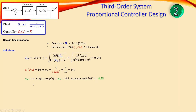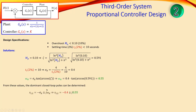The imaginary part omega_d is geometrically calculated as sigma_d times the tangent of arccos(zeta). Substituting sigma_d and zeta gives omega_d ≈ 0.55. From these values the dominant closed-loop poles can be written as minus sigma_d ± j·omega_d, or minus 0.4 ± j·0.55. We now need to select a design point from these poles.